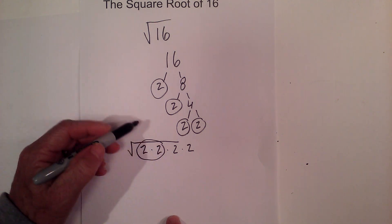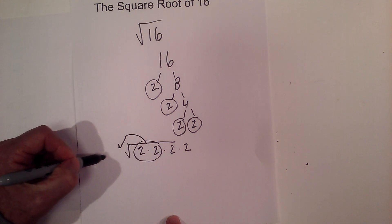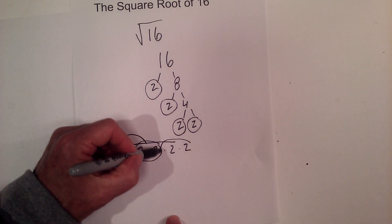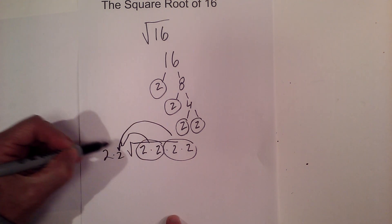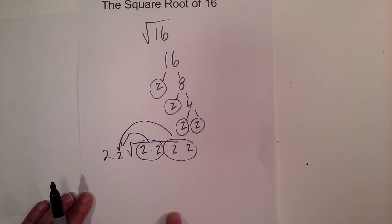So I have a pair of 2s. This comes out and that becomes a 2. And another pair of 2s comes out. When you pull them out from under the radical sign, each pair equals only one number.